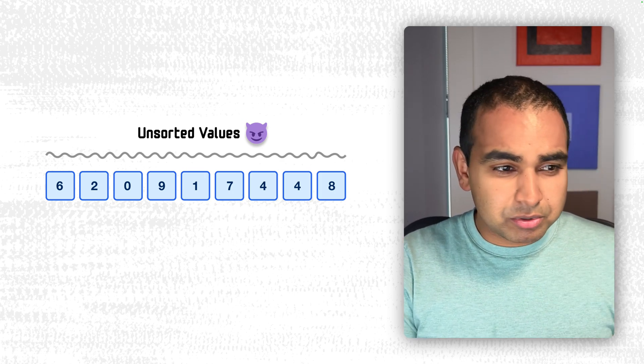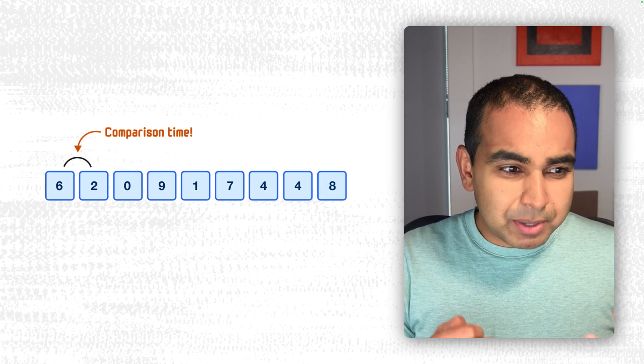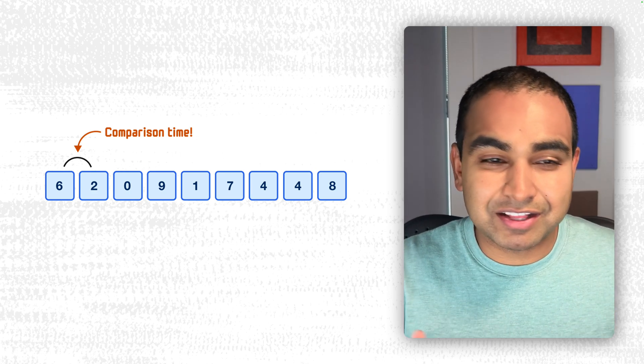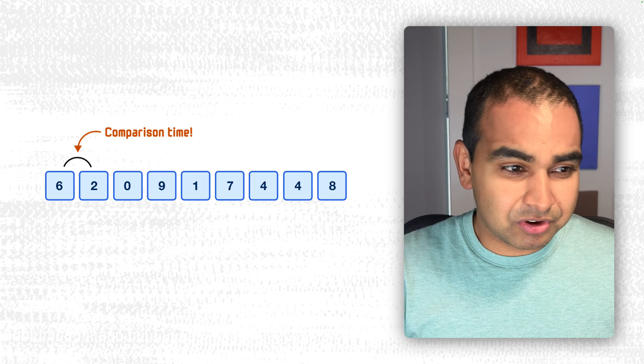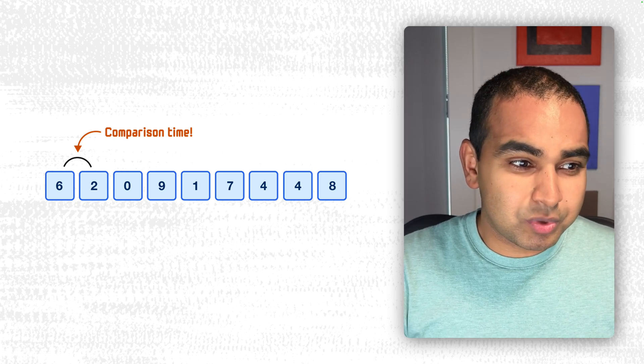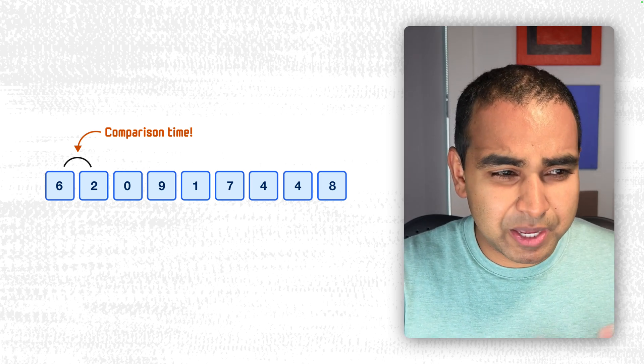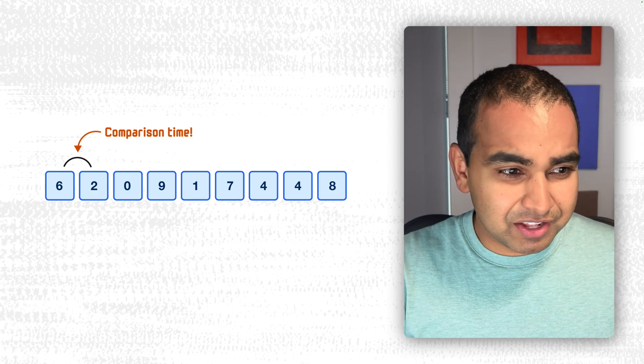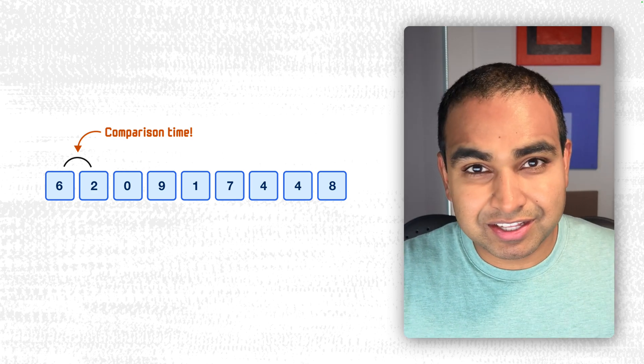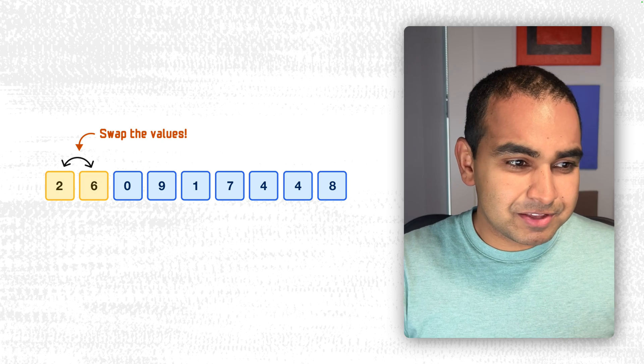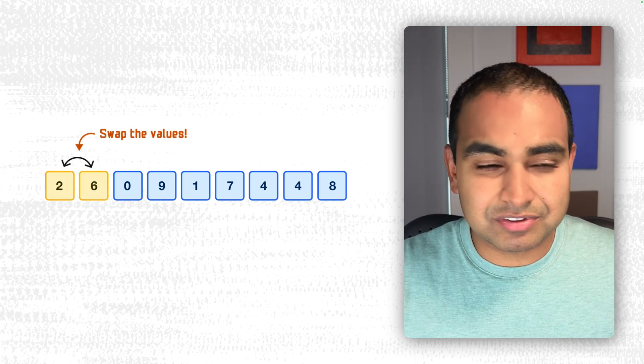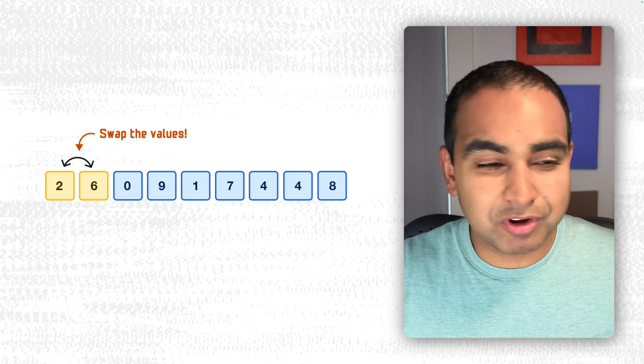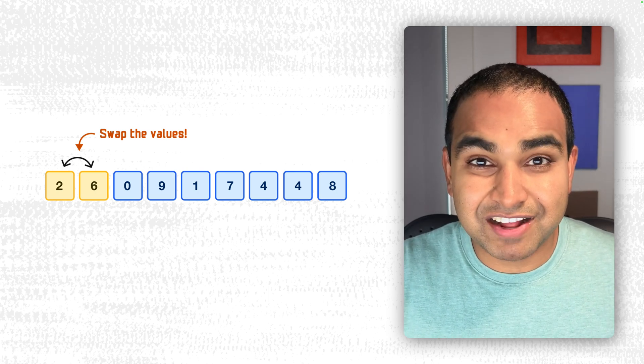So the first thing we do with bubble sort is we always compare adjacent values. So the first thing we do here is the first two adjacent values are 6 and the 2. And so we compare them. And what we do when we compare is we ask ourselves, is the first value less than or greater than the second value? In this case, it's not. 6 is not greater than 2. So we just swap the values. So now 2 and 6 are the new arrangement for the first two values.